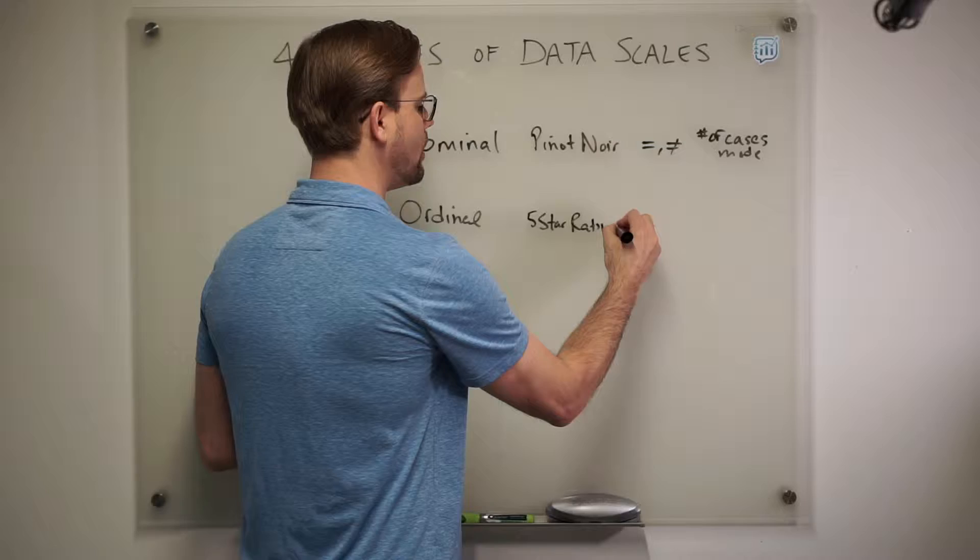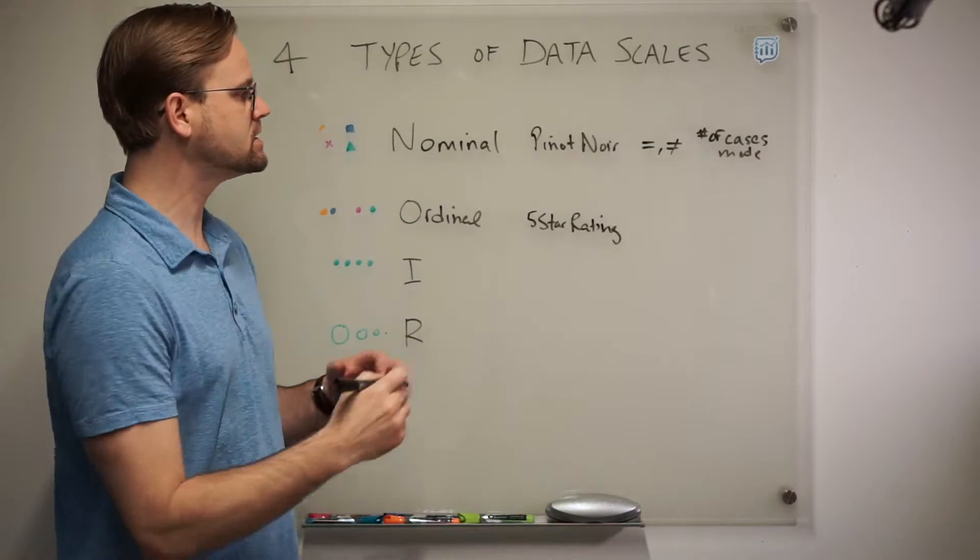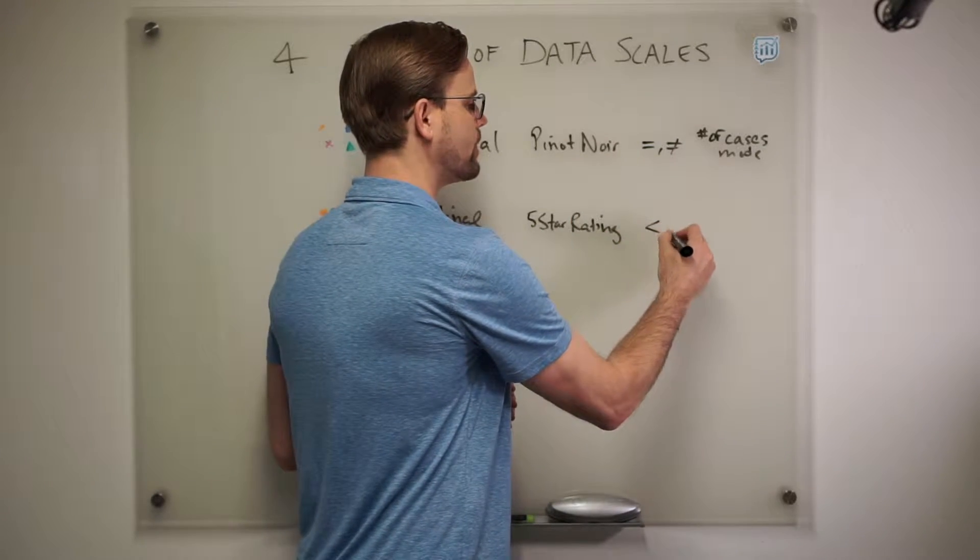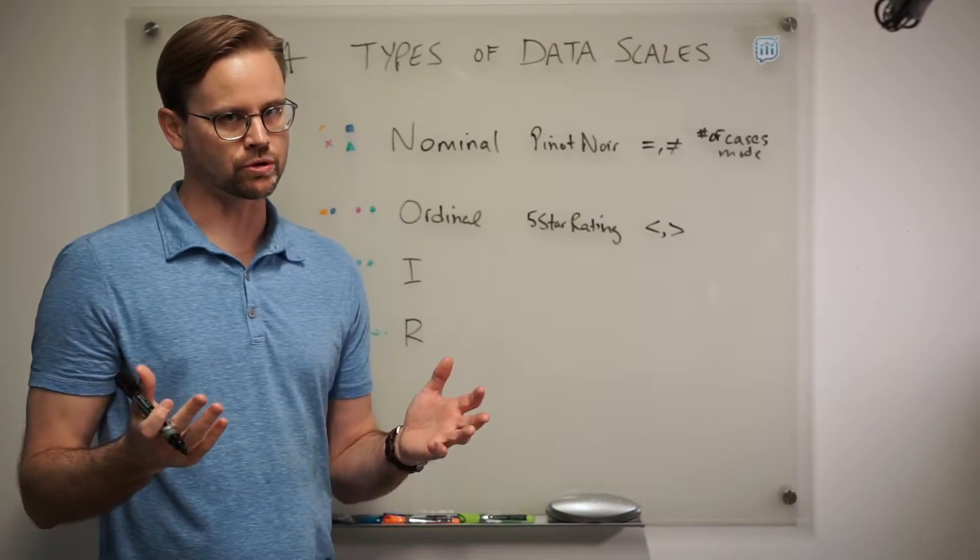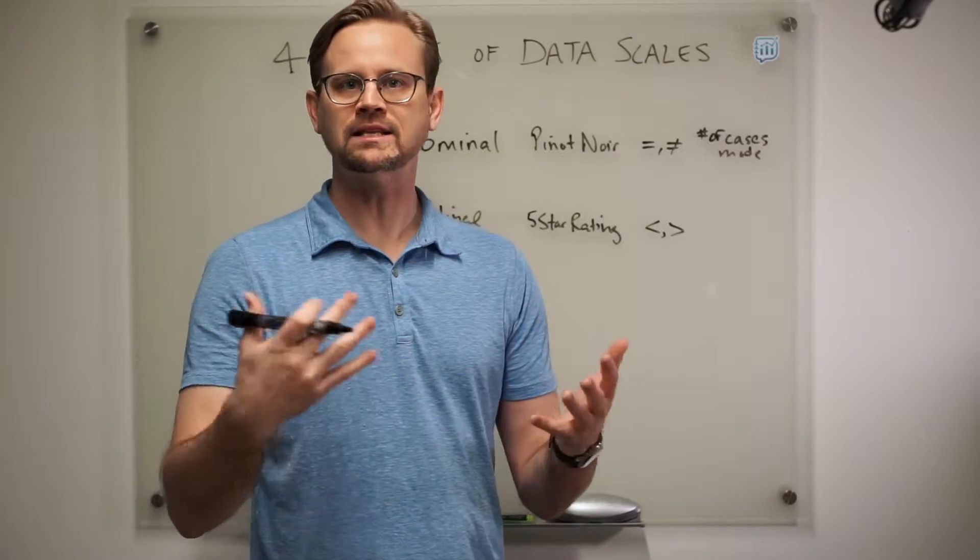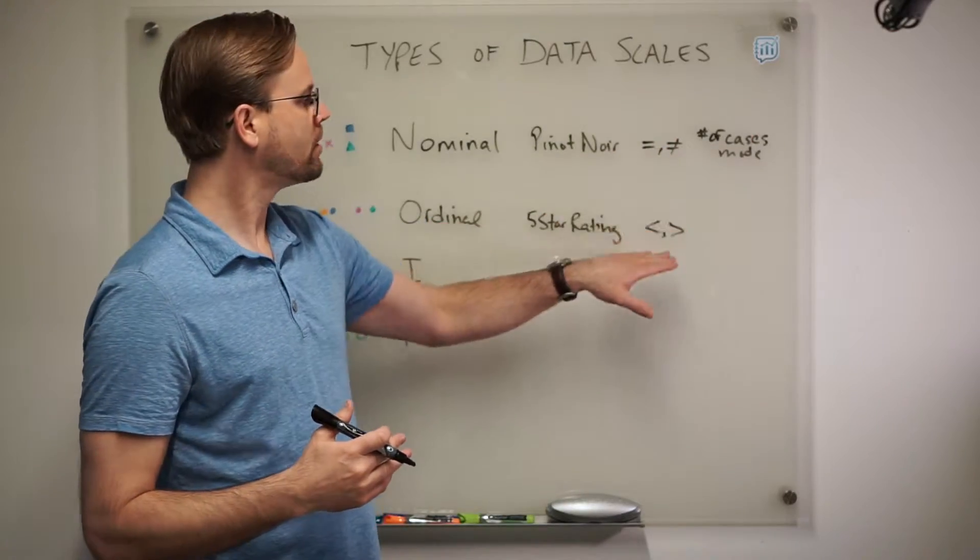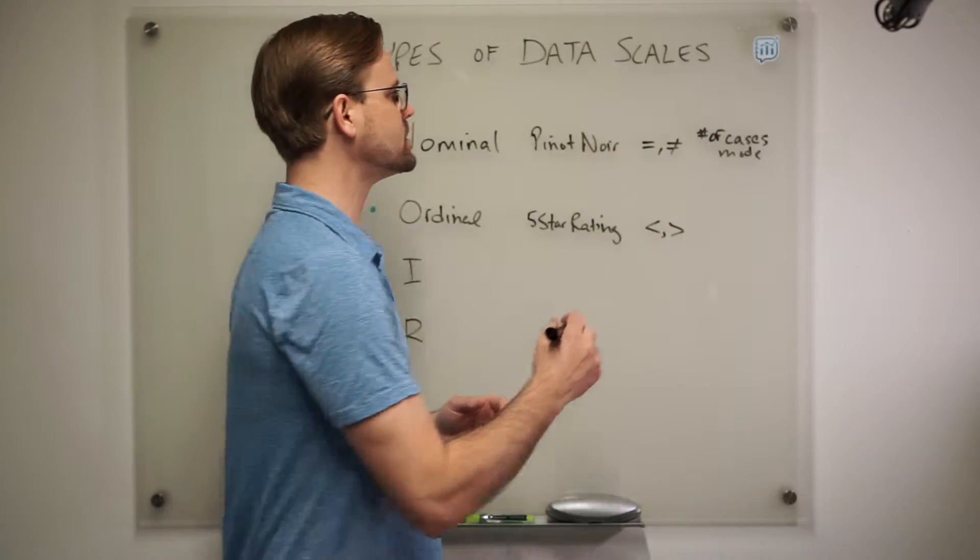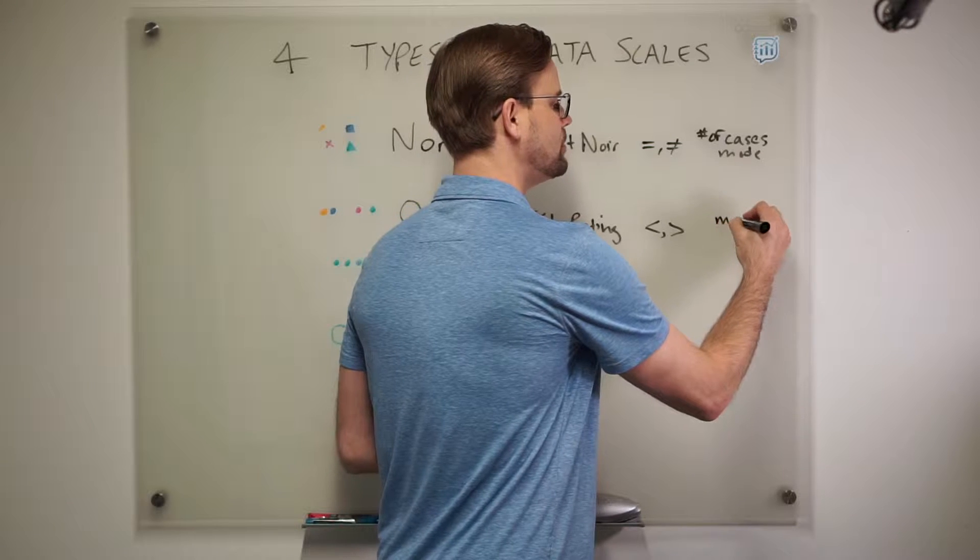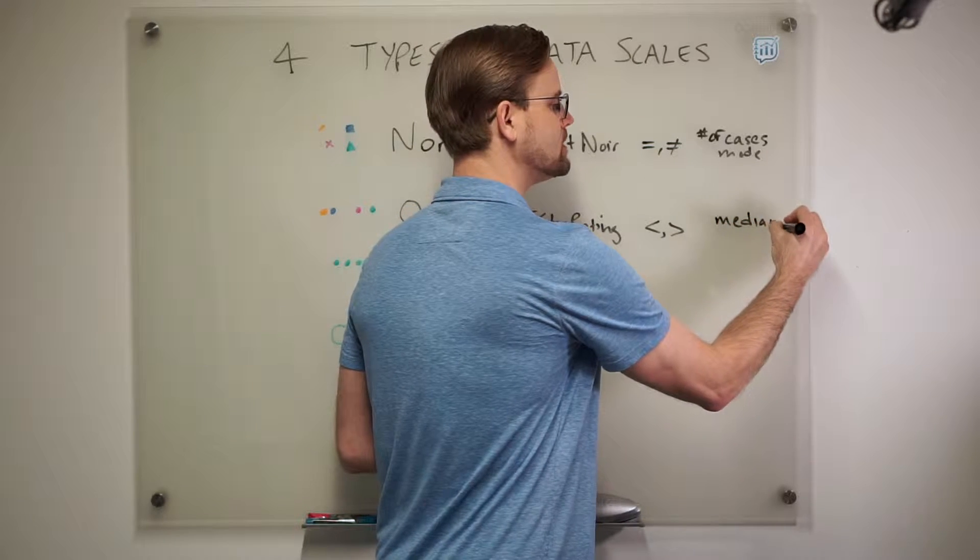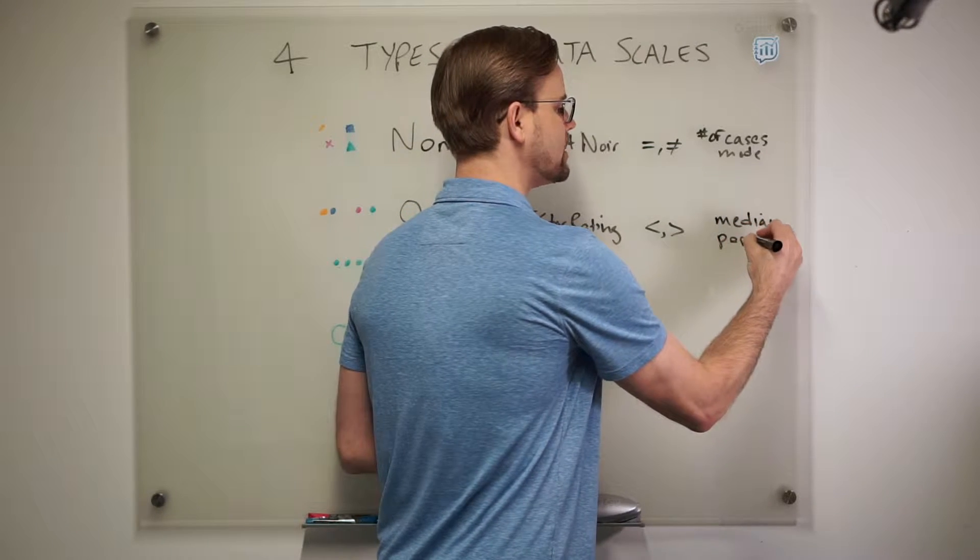What's interesting about these types of data scales is that there is now a notion of greater than or less than. There's also equal to or not equal to. If I give it a four, it's not the same as if you give it a three. Those are different and we can still count them. But also there's an order to our scores now, which allows us to do things like medians, the 50th percentile, as well as other percentiles.